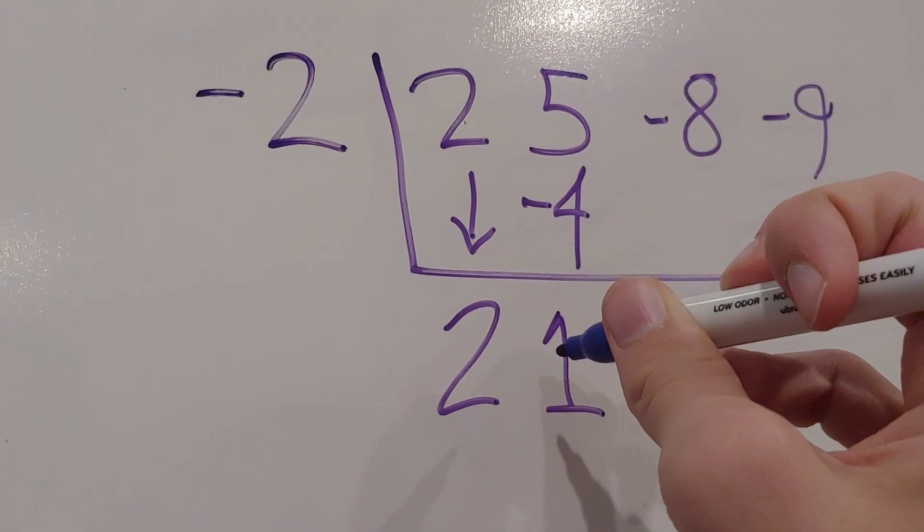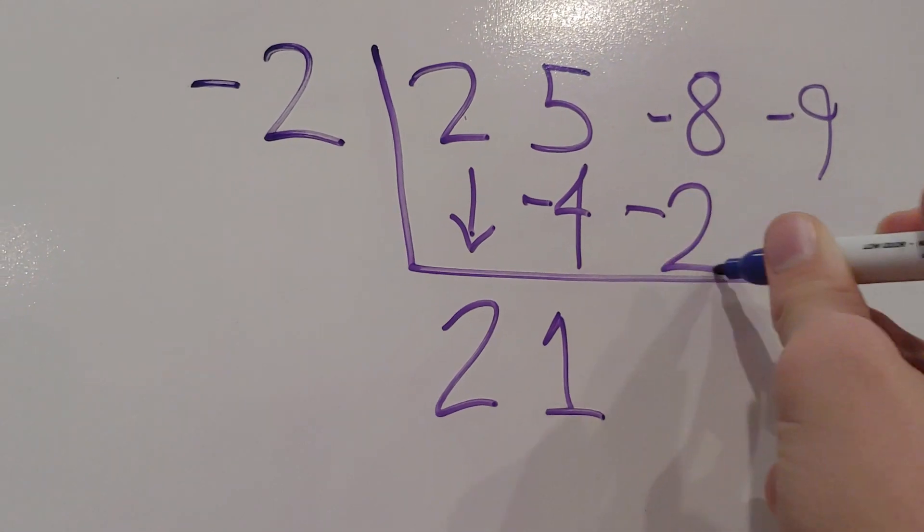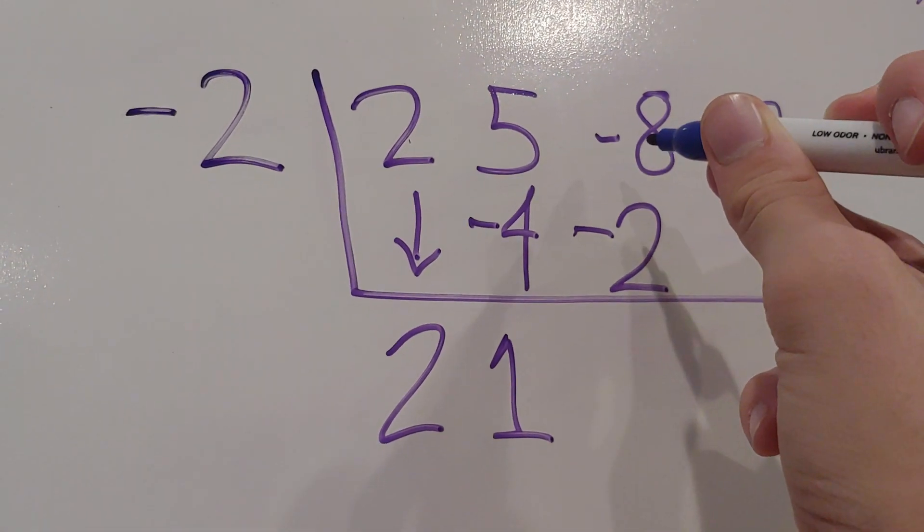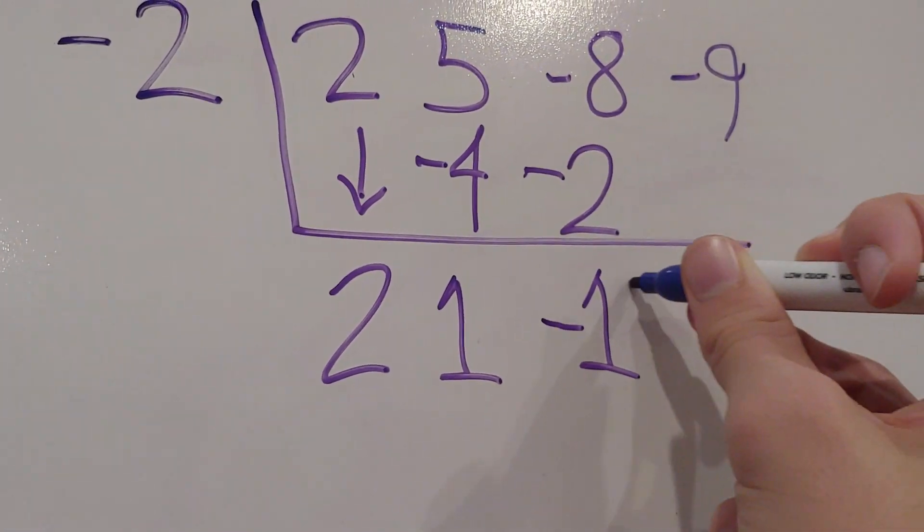Then we multiply negative 2 and positive 1. That equals negative 2. And then negative 8 plus negative 2 gives us negative 10.